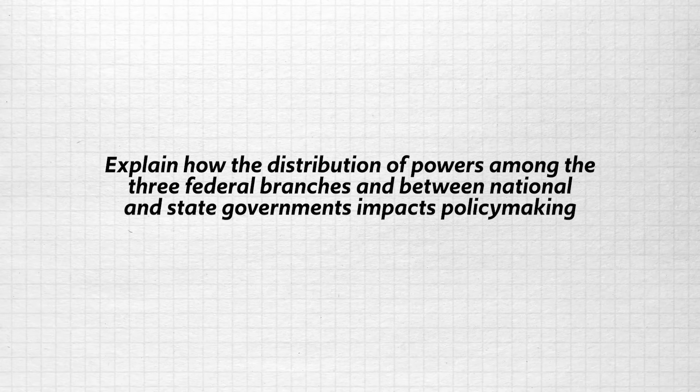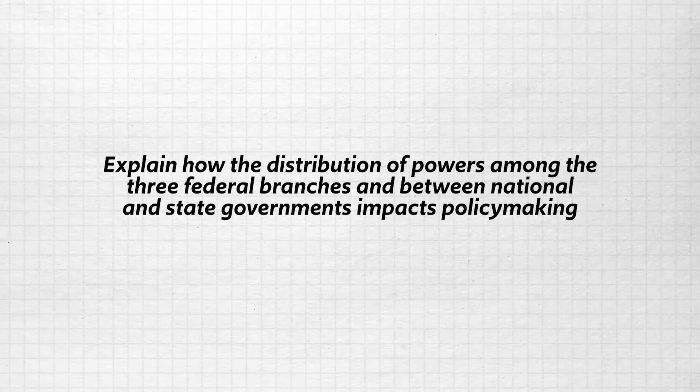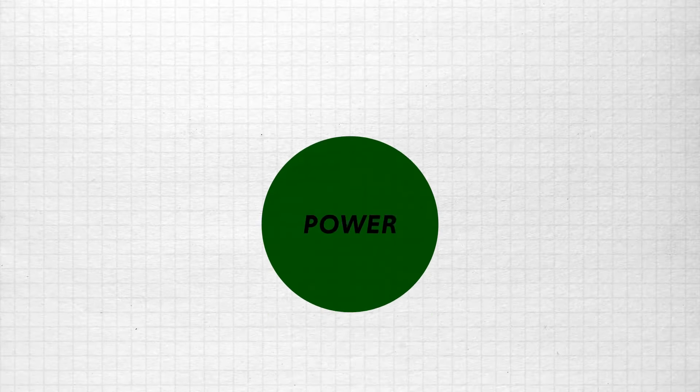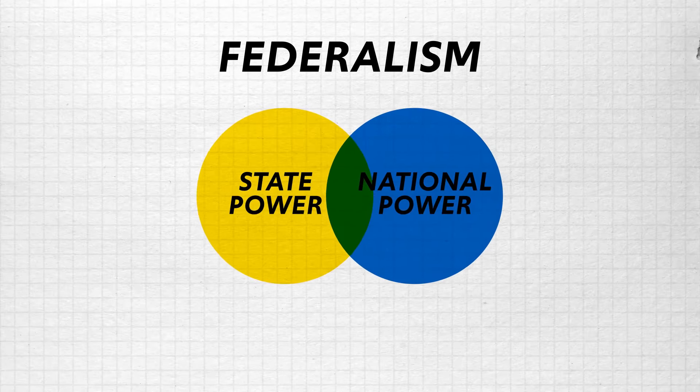So here's what we're trying to do in this video: explain how the distribution of powers among the three federal branches and between the national and state governments impacts policy making. The first thing to mention is that because federalism divides power between federal and state and local governments, there are more access points for stakeholders to influence policy outcomes. Stakeholders are folks like you and me who are affected by the outcome of legislation, and because federalism divides power this way, we have a lot more places where we can get involved. But national policy is also constrained by the sharing of power, and for that let me give you two current examples: environmental regulations and the legalization of marijuana.